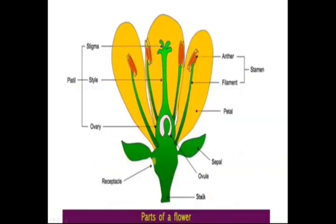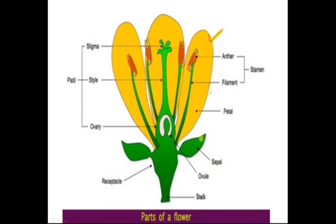Look at the parts of flowers. You can confirm the parts of flowers: this is sepal, petal, anther, filament — anther and filament together are called stamen. Stigma, style, and ovary — these together are called pistil. Stamen consists of anther and filament.